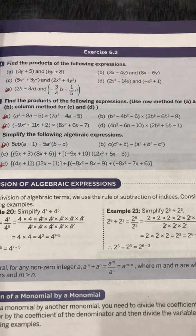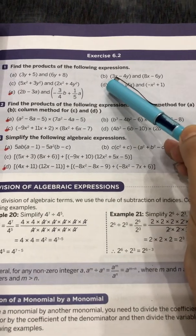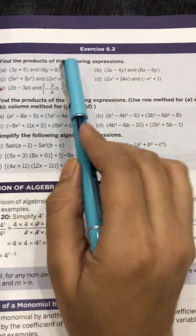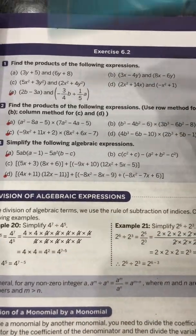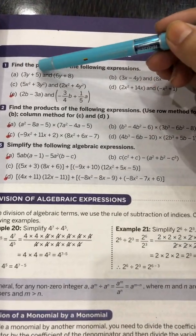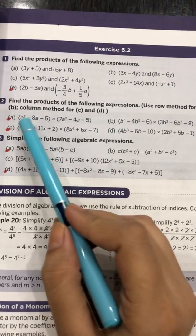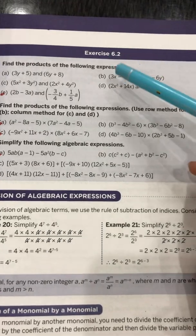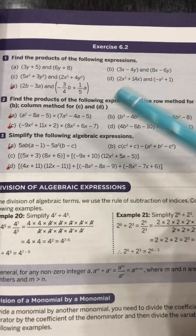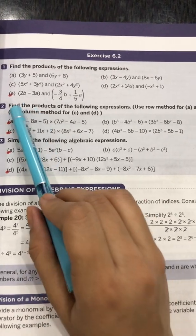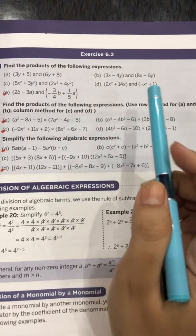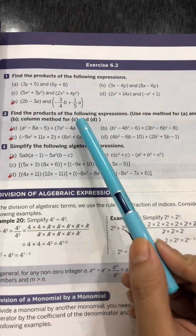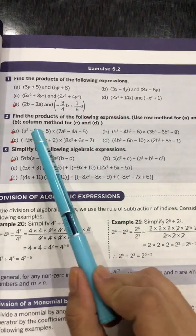Good morning students. In the previous lecture we covered question number one of exercise 6.2, which was based upon the product of a binomial with a binomial. If there are two terms in an expression, that is known as a binomial. If there are more than two terms — three or more — that is known as a polynomial. Now I'm going to start question number two, where you have to find the product of algebraic expressions. You have to use the row method for parts A and B, and the column method for parts C and D.